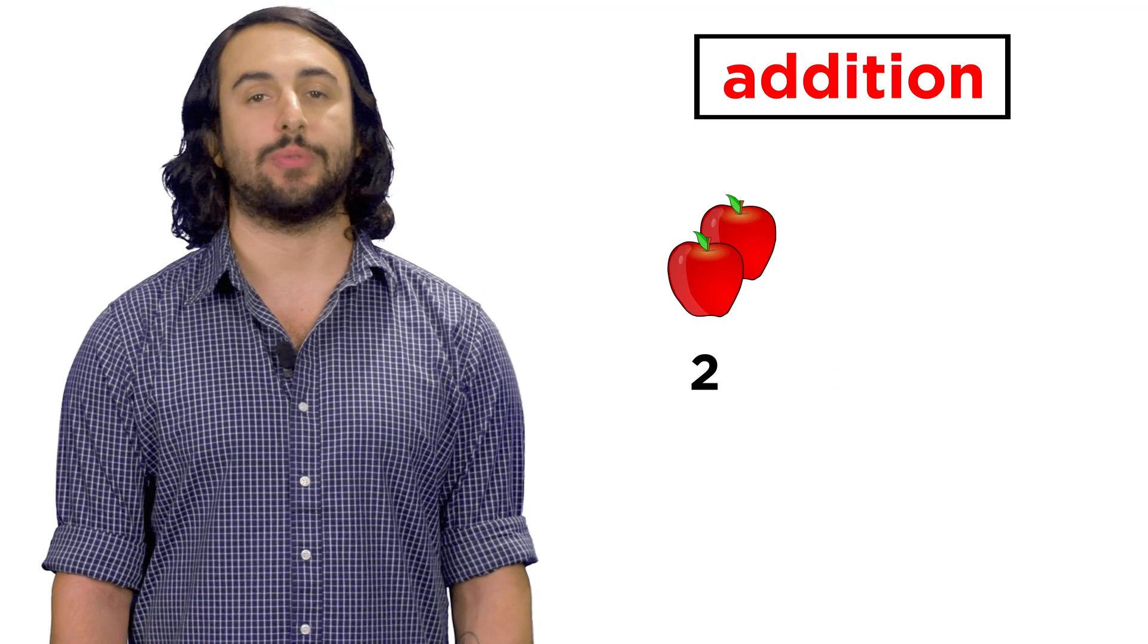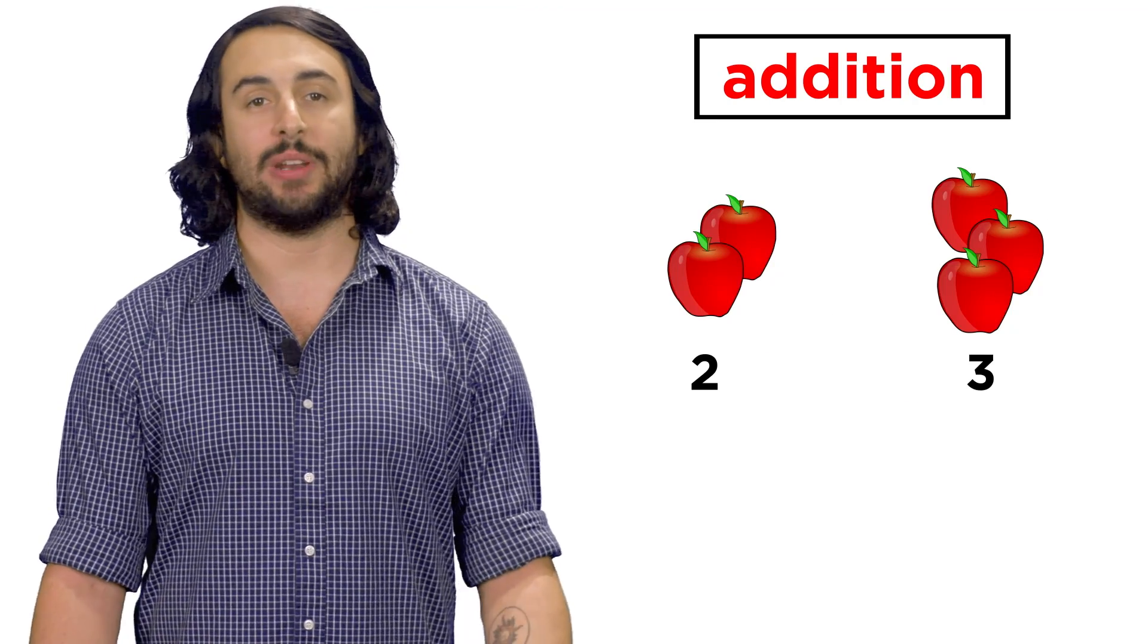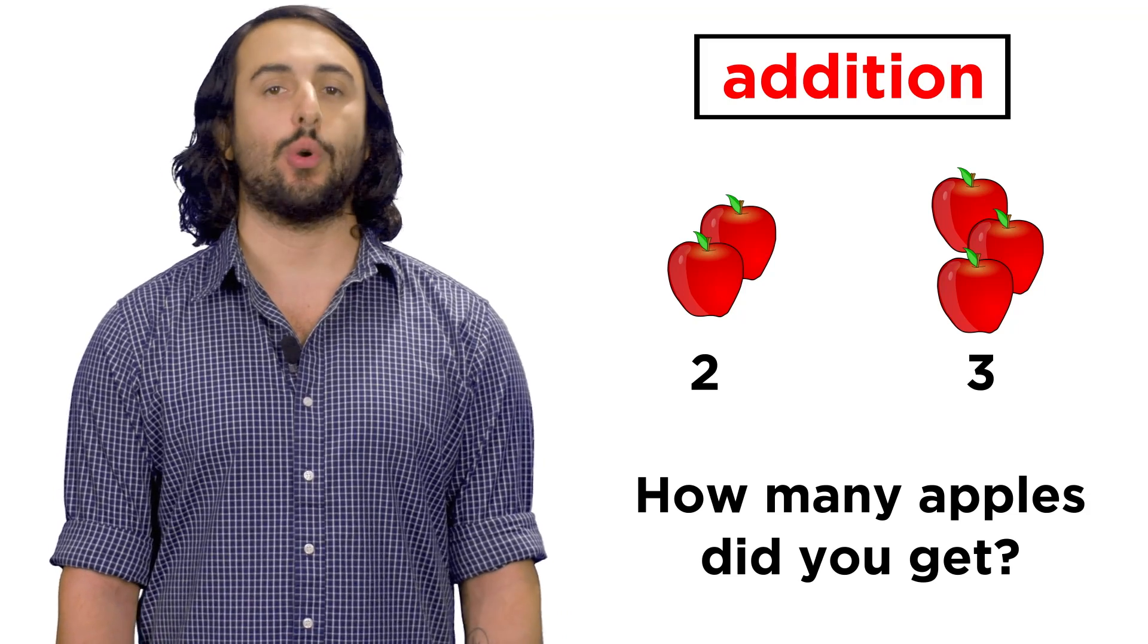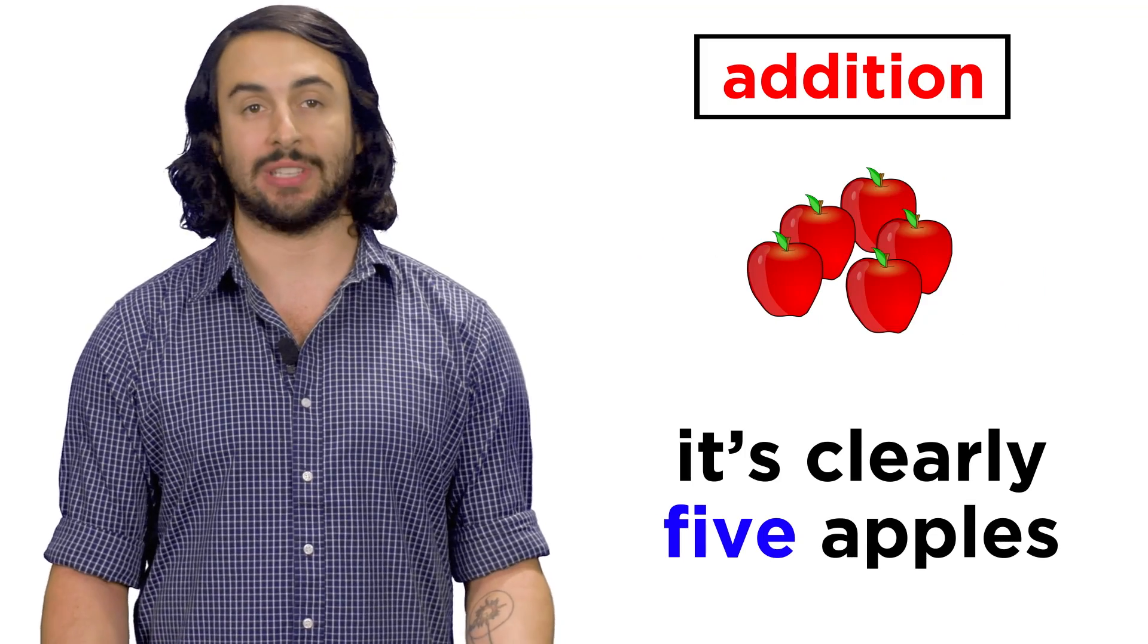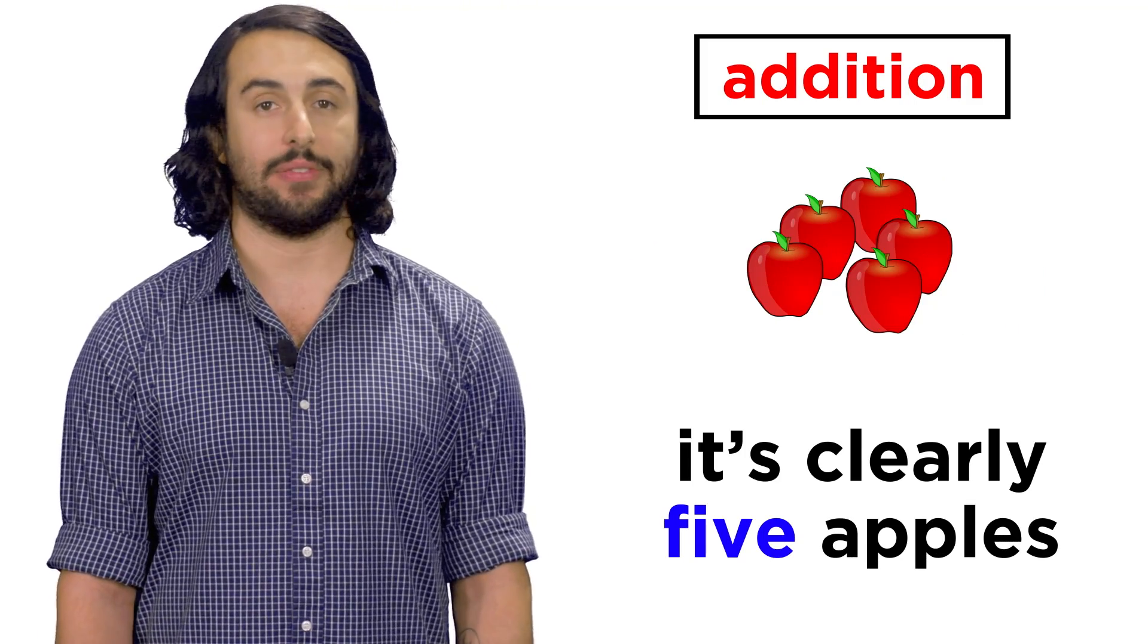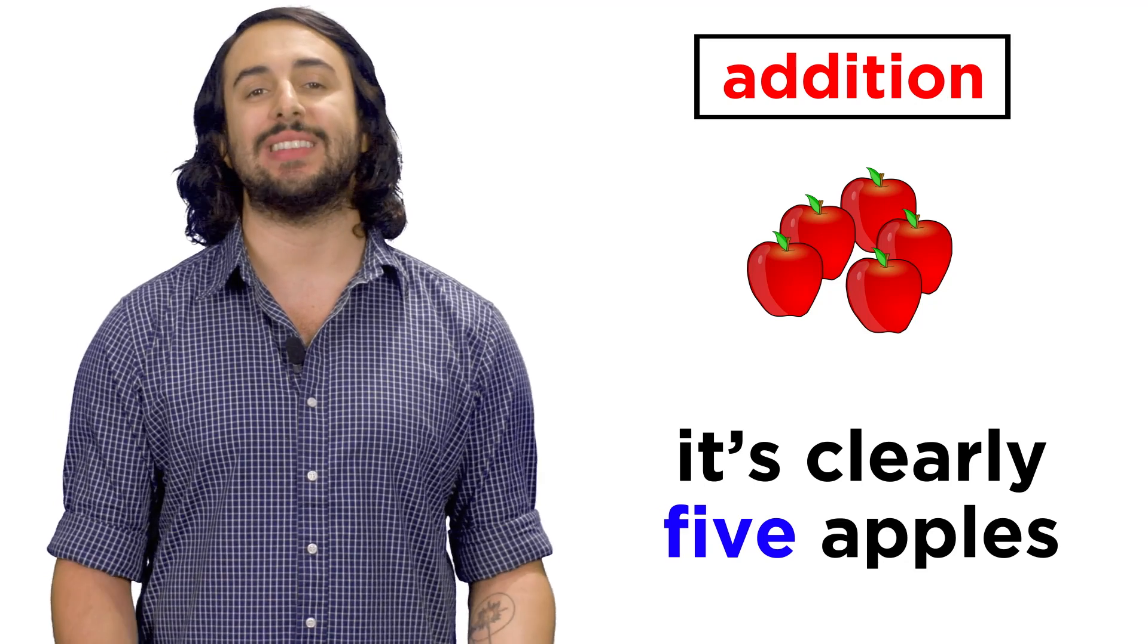If you get two apples from one vendor, and then three from another, how many apples did you get? Of course, we can easily count the resulting pile and see that there are five. But how do we represent this mathematically?